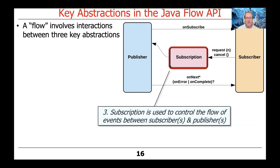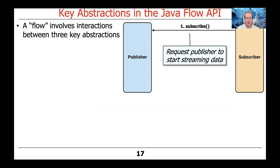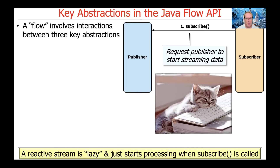A subscription is used to control the flow of events between subscribers and publishers. As a subscriber, you can use a subscription to indicate to the publisher how much data to send — that's the iterator pattern where you say, I will take up to N items. You can also cancel the subscription. When a subscriber is created, it subscribes to the publisher to start receiving streaming data. Note that a reactive stream is very much like a Java sequential or parallel stream — they're lazy and don't do anything until the terminal operation. In the reactive streams model, the subscribe method is basically that terminal operation that sets the wheels in motion.